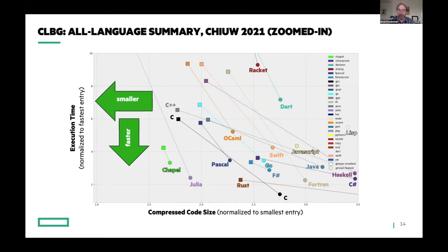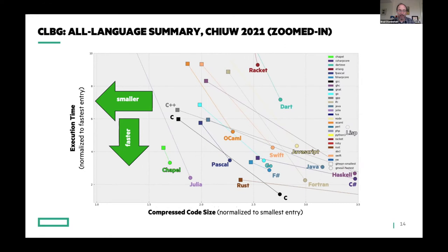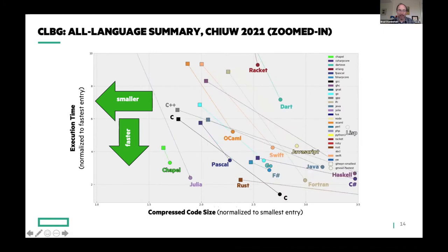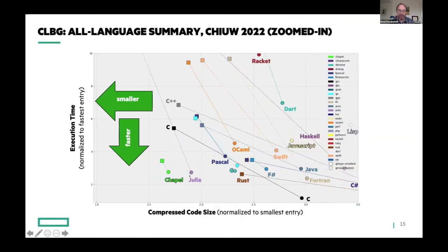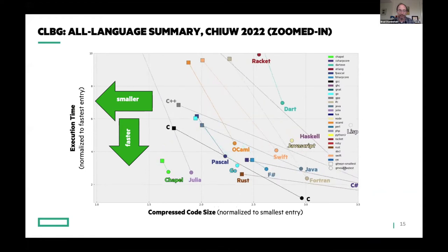Comparing last year to this year: most of these languages took a jump up — they got slower overall — other than C. But Chapel actually takes a jump down, meaning we got faster. Two things happened: the LLVM backend benefited some of our performance, and we submitted new versions of some benchmarks that made us more competitive with other languages, particularly C. That's been a nice improvement in our standings on that site this year.